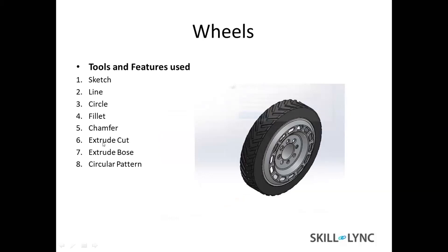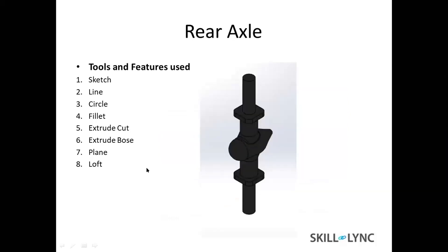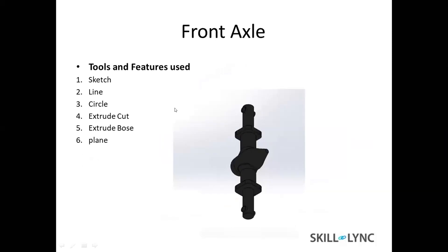These are the wheels of the truck. The features used are sketch, extrude cut, and extrude boss. This is the rear axle of the truck — just a representation. This is the front axle. It has holes for the steering knuckle and is also a representation.